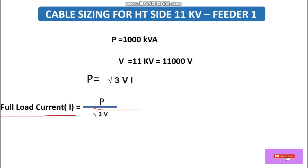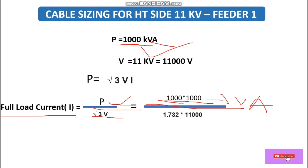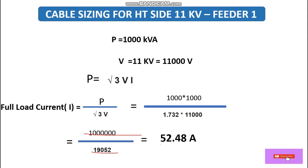Full load current = Apparent Power ÷ (√3 × Voltage). We convert 100 kVA to VA: 100 × 1000 = 100,000 VA. Substituting the values: √3 = 1.732, Voltage = 11,000 V. After calculation, the full load current comes to 52.48 amperes. This is the full load current on the HT side.